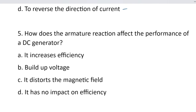Question number 5. How does the armature reaction affect the performance of a DC generator? Option A, it increases efficiency. Option B, build up voltage. Option C, it disturbs the magnetic field. And option D, it has no impact on efficiency.